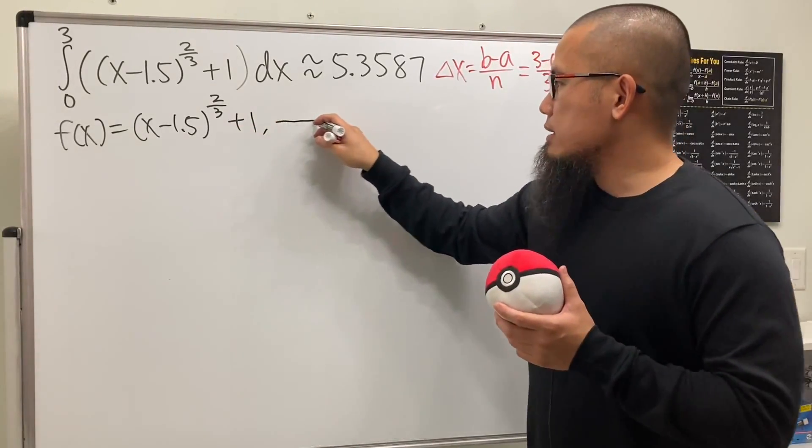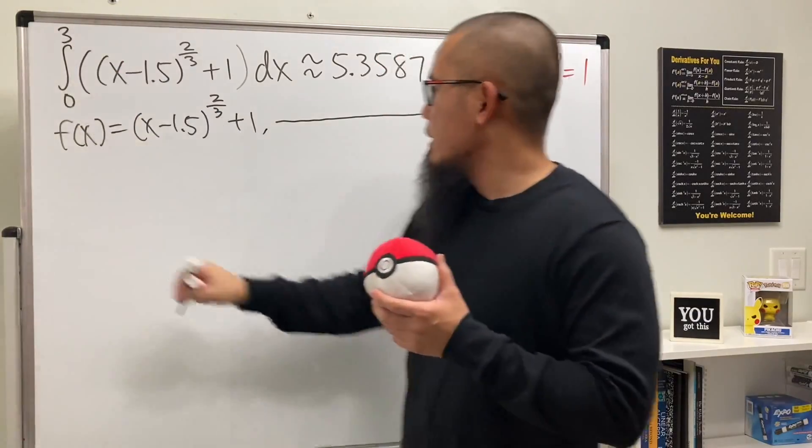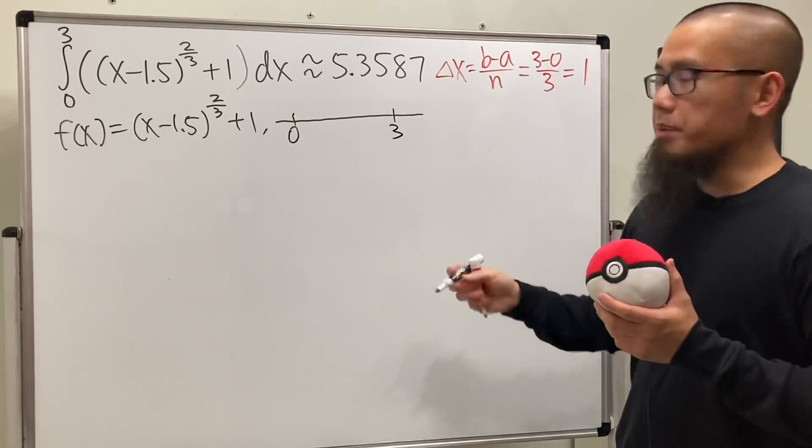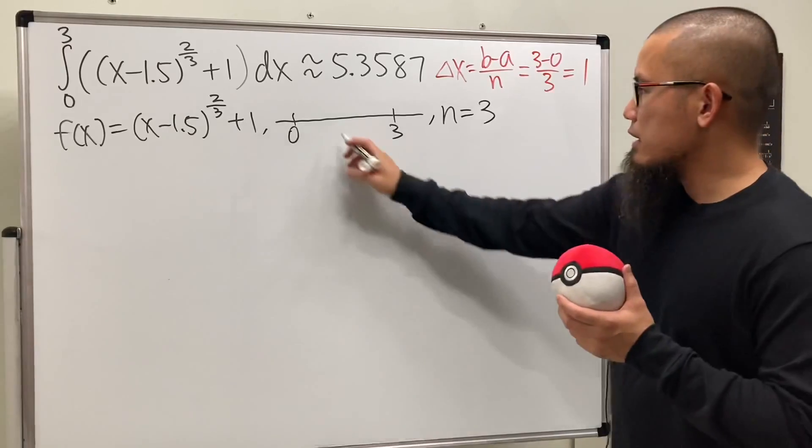Let's draw a number line. We're looking at the interval from 0 to 3. This is 0 and this is 3, and we have to cut this into three pieces because n equals 3.